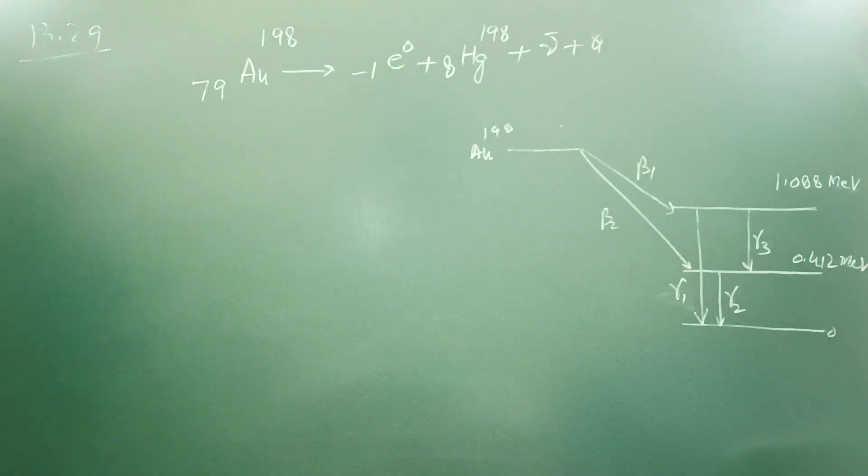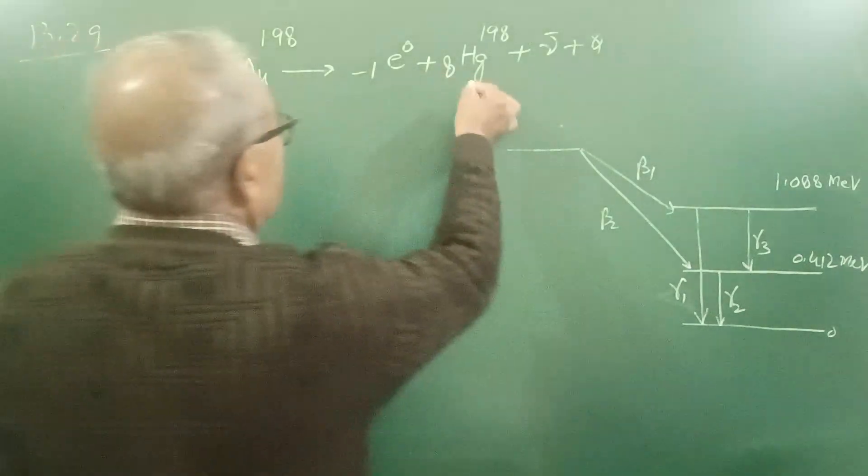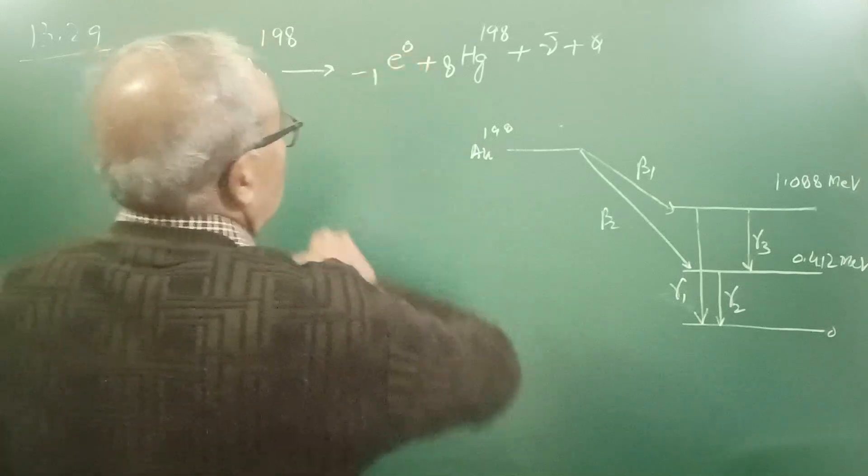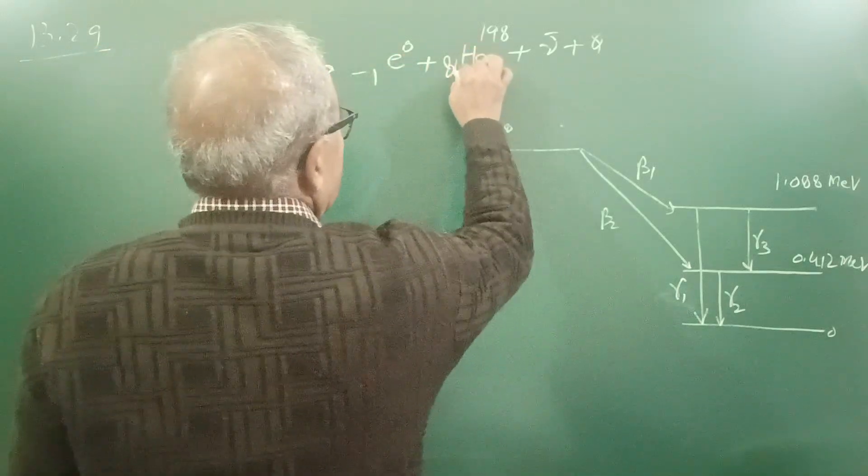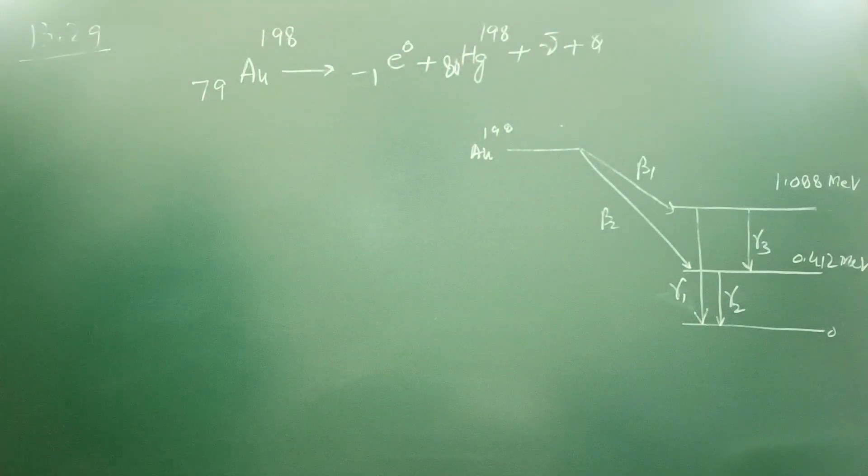This is a question from NCERT book 13.29. 79 gold AU-198 decays with beta decay according to this equation: -1 e0 plus 80 Hg-198 mercury, and T into plus Q.